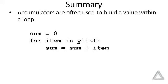We initialize that to zero outside of the loop, and here we are assuming yList is a collection of numeric values. We are just saying for item in yList, add that item to the current sum and reassign that back to sum, reassign that back to the accumulator.